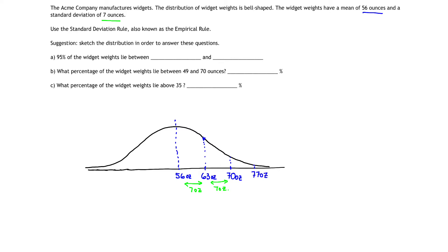Now I do the same thing on the left side. At the inflection point, if I take 56 and subtract 7 ounces for my standard deviation, that gives me 49 ounces. Then 49 minus 7 gives me 42 ounces, and 42 minus 7 gives me 35 ounces.